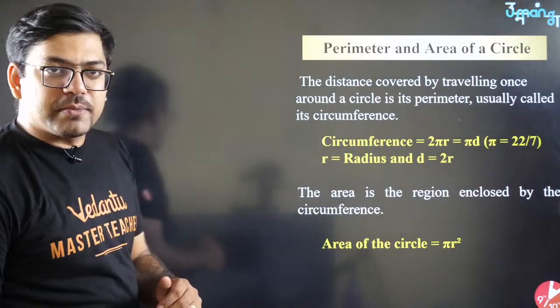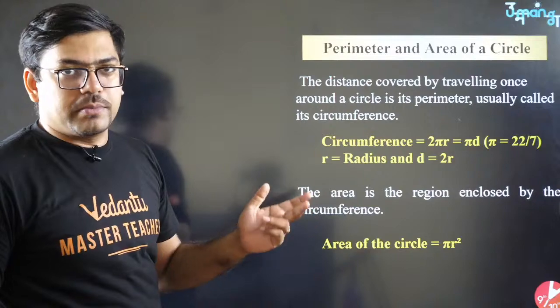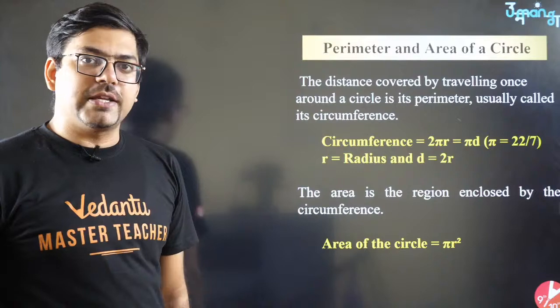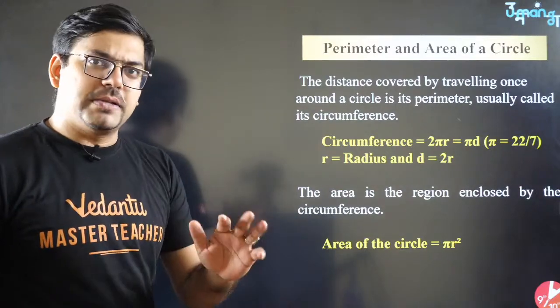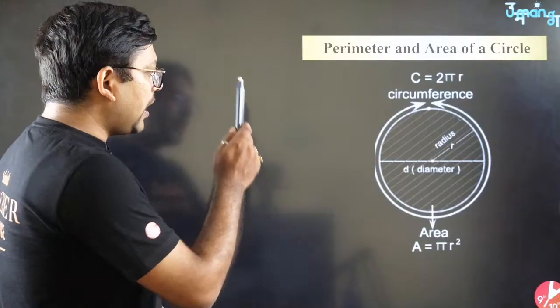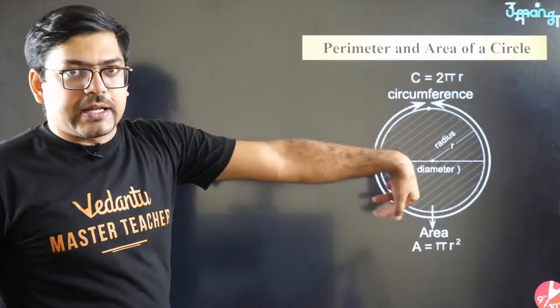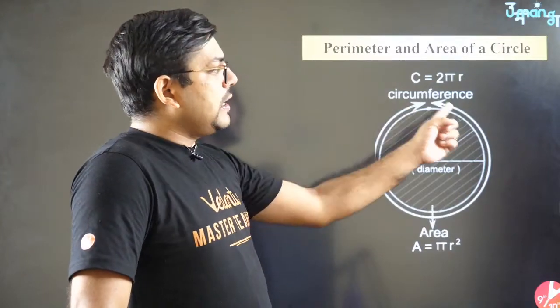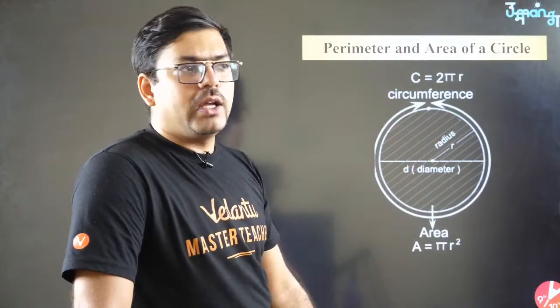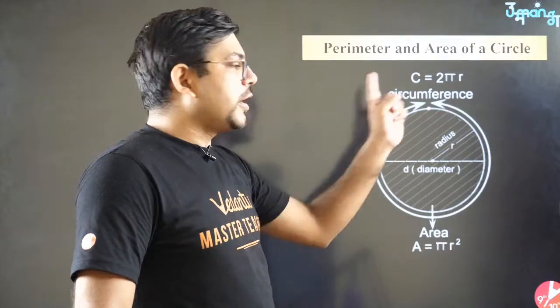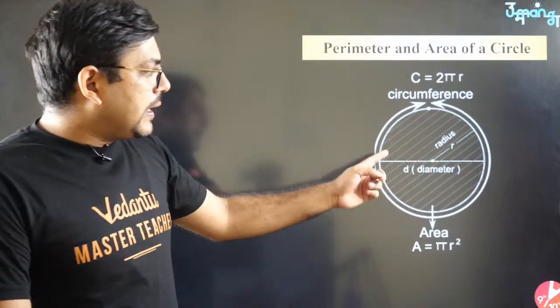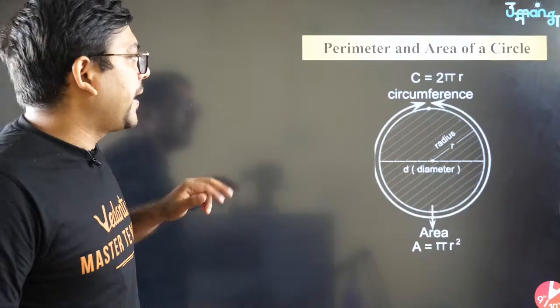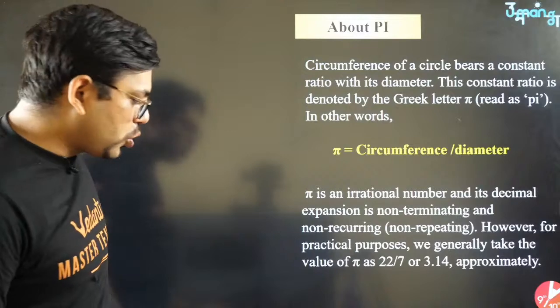Pehli wali cheez batane ki zarurat nahi hai shayad ki perimeter of circle kya hota hai. Perimeter of circle 2πr hota hai aur area of circle πr² hota hai. This is simple. Perimeter ka matlab hai wo bahar ka boundary hota hai, that is 2πr, aur radius r, diameter ka value hota hai 2r.